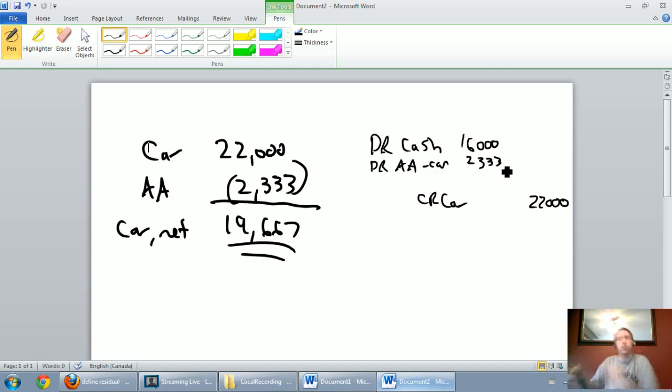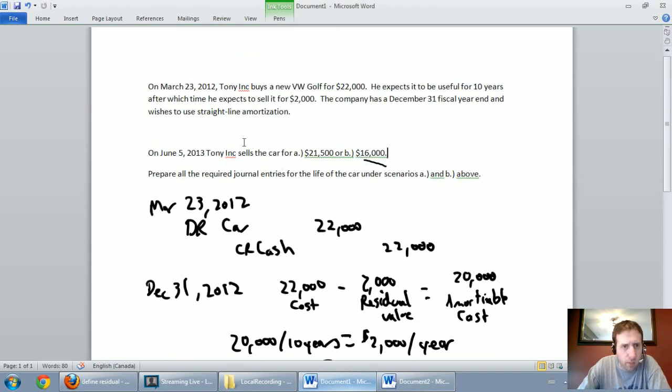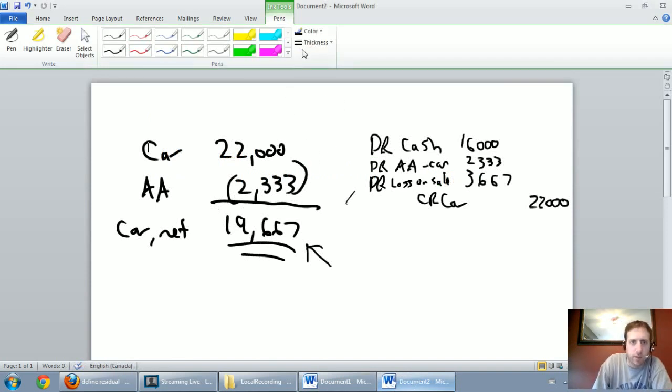Again, we're done, right? We got the money, we got rid of our car, except our journal entry doesn't balance. I have $18,333 in debits. I have $22,000 in credits. I'm clearly missing a big debit. And that debit is to our new account called loss on sale. If I'm missing a credit, if I have a loss on sale, I'm missing a debit. So debit loss on sale for the missing amount. I had an asset that I thought was worth $19,667. I only got paid $16,000 for it. Therefore, I came up $3,600 short. Our debit to loss on sale is $3,667.